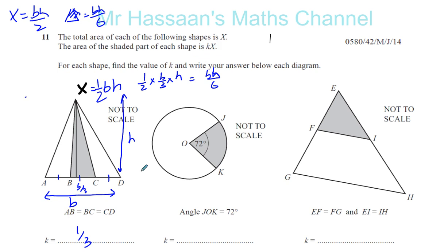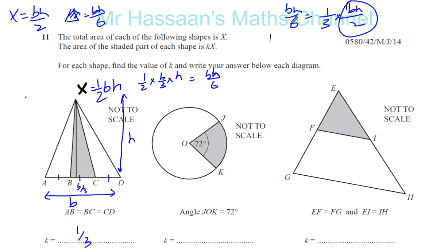So k is one third of the whole area, because the base is one third and the heights are the same — therefore the area is one third. You can see that BH/6 is the same as one third of BH/2. The area of x is BH/2, and the shaded part is BH/6. That finishes the first shape.